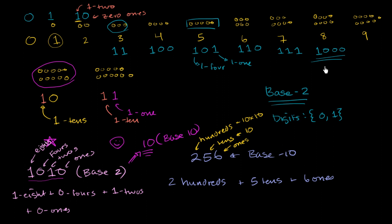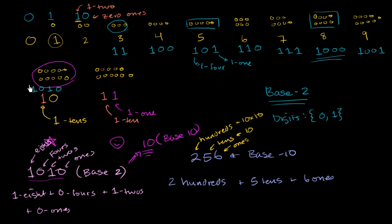When you increment 8 by 1, we'll have 1 eight and 1 one — written as 1001. And then continuing to what we consider 10 objects: in base 2 you would say you have 1 eight, 0 fours, 1 two, and 0 ones — written as 1010. So 1010 in base 2 equals 10 in base 10. Hopefully that doesn't confuse you too much.